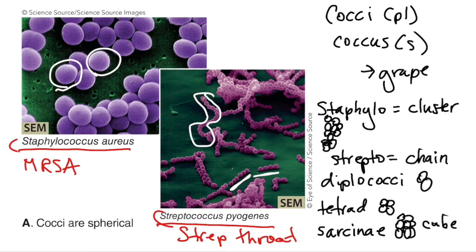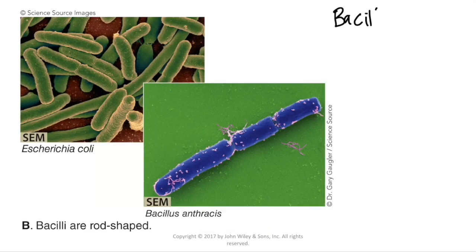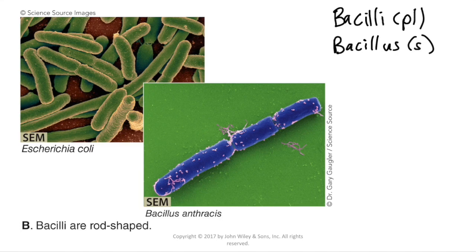So staphylococcus, streptococcus, and diplococci are the most common ones. Next up we have the bacilli — bacilli is plural, bacillus is singular. These are described as rod-shaped; they're elongated, rod-shaped bacteria.